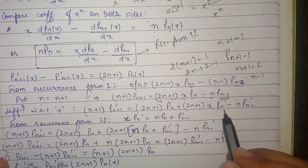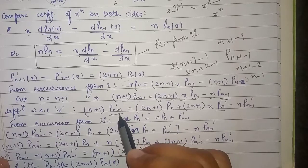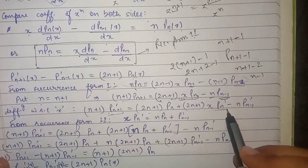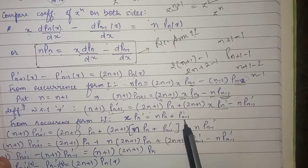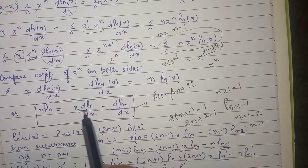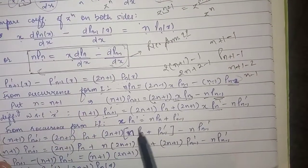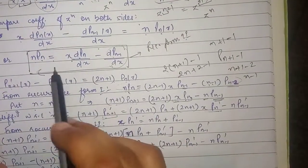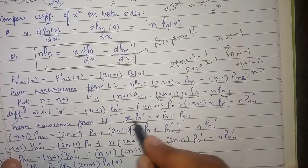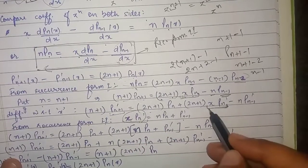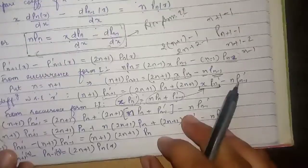We differentiate this equation with respect to x, applying the product rule where needed. We get (n+1)·P'(n+1) = (2n+1)·Pn + (2n+1)·x·P'n - n·P'(n-1). We now use recurrence formula 2, which gives x·P'n = n·Pn + P'(n-1), and substitute this value.